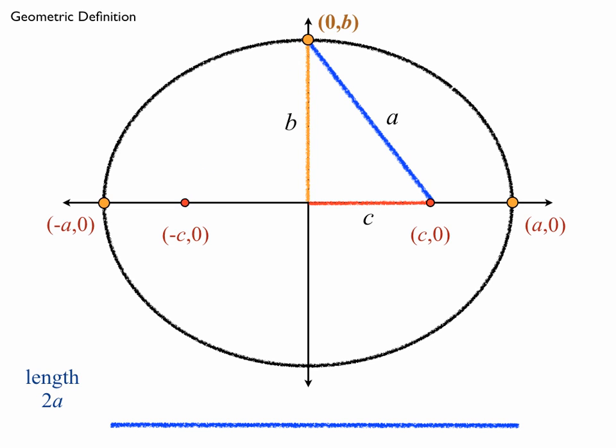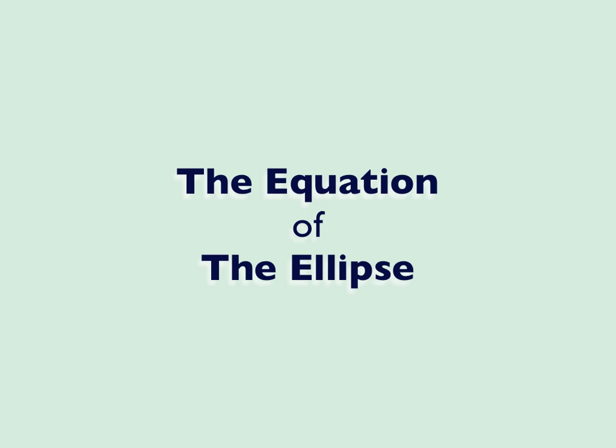Now, you have a right triangle with legs b and c respectively, and so the Pythagorean formula tells you that a squared is equal to b squared plus c squared. By symmetry, there's a point on the bottom, we'll call that 0, negative b. So we're going to need that relationship later when we derive the equation of the ellipse.